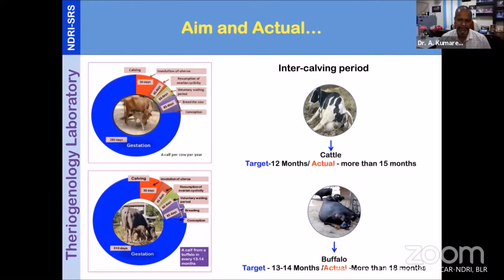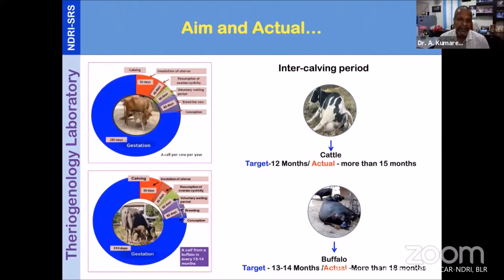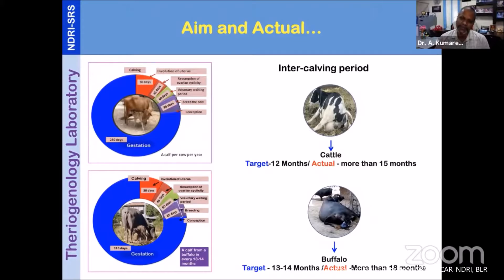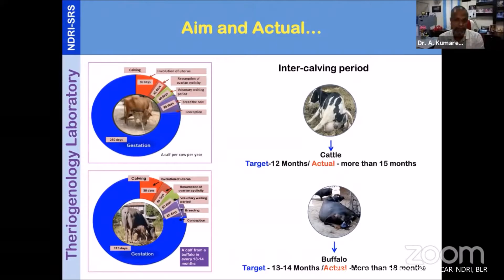When we talk about reproduction to any farmer — be it a commercial farmer, semi-commercial farmer, smallholder, or a veterinarian looking after these animals — the first and foremost desire they communicate is to have more number of calvings in the lifetime of that particular animal so that they get more milk. Normally we expect seven to eight calvings in the lifetime of a cow. But in developed countries, large data shows the average cow production ability is now three lactations per cow. After three lactations, it is well documented that reproductive disorders are increasing.